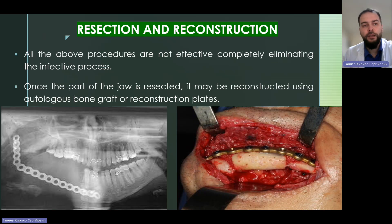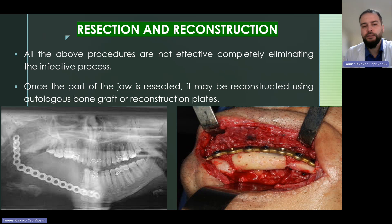Resection and reconstruction: when all the above procedures are not completely effective in eliminating the infective process, the affected part of the bone is resected. It may be reconstructed using autologous bone graft or reconstruction plates. Examples of such surgery are shown, mostly using titanium or the patient's own bone for reconstruction.